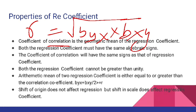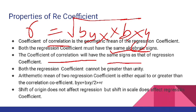Second property: both the regression coefficients have the same algebraic sign — agar byx positive hai to bxy bhi positive hoga, byx negative hai to bxy bhi negative hoga. Next property: coefficient of correlation will have the same sign as that of the regression coefficients — because r ko hum dono regression coefficients se find out kar sakte hain, to jo sign regression coefficient ka hoga wahi sign correlation coefficient ka bhi hoga.